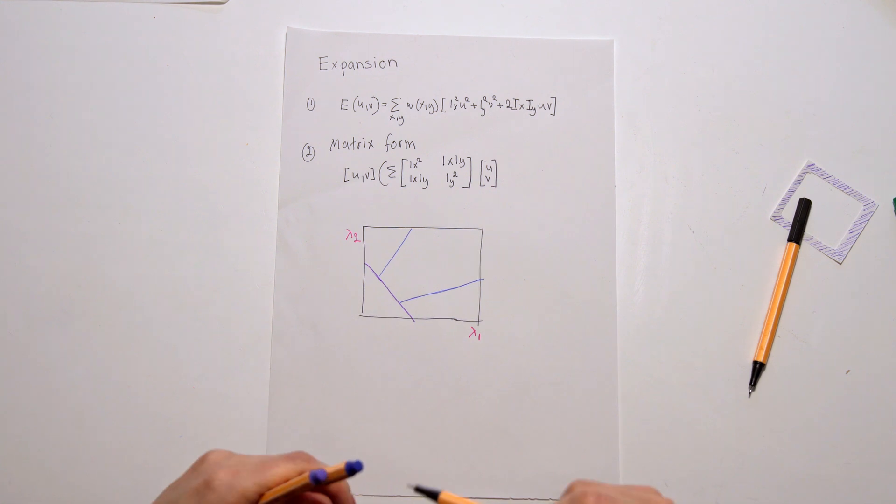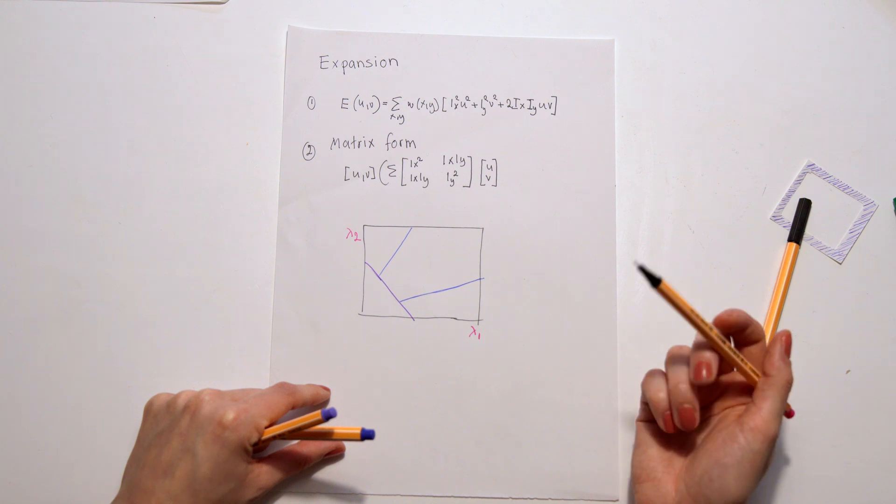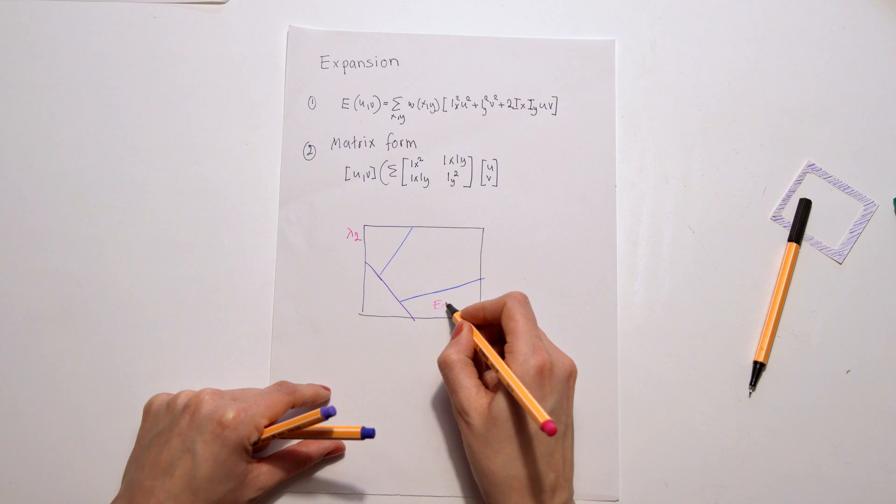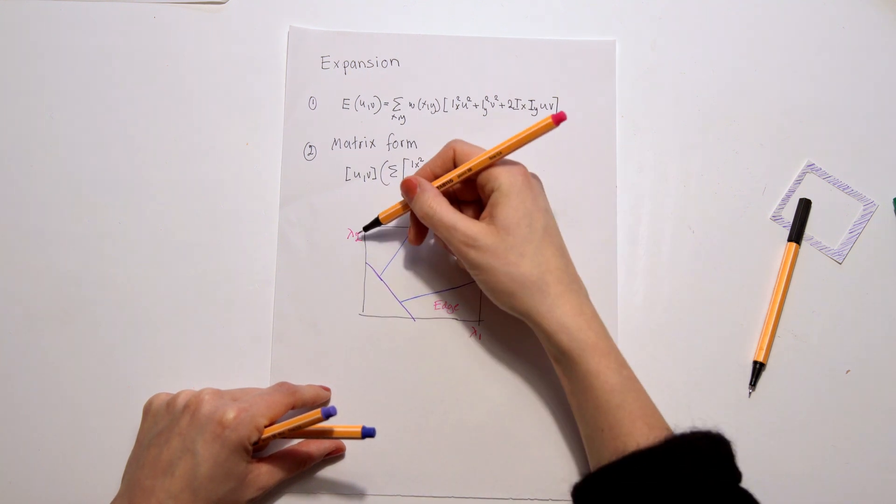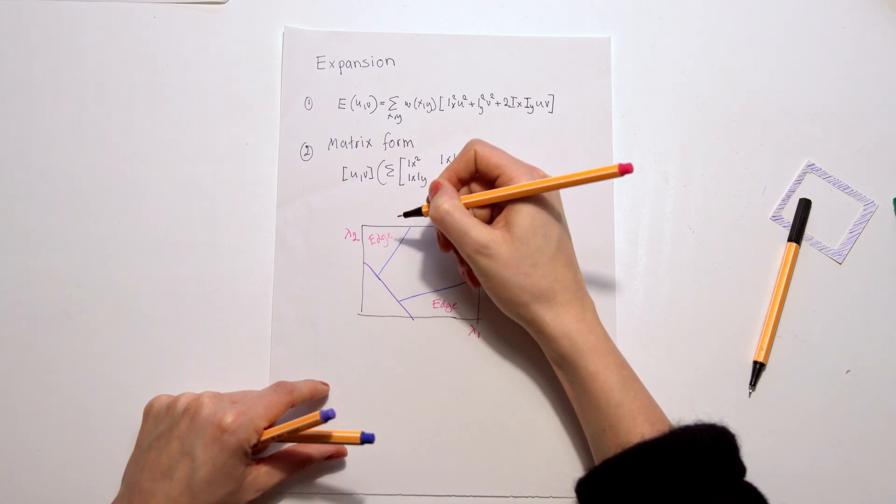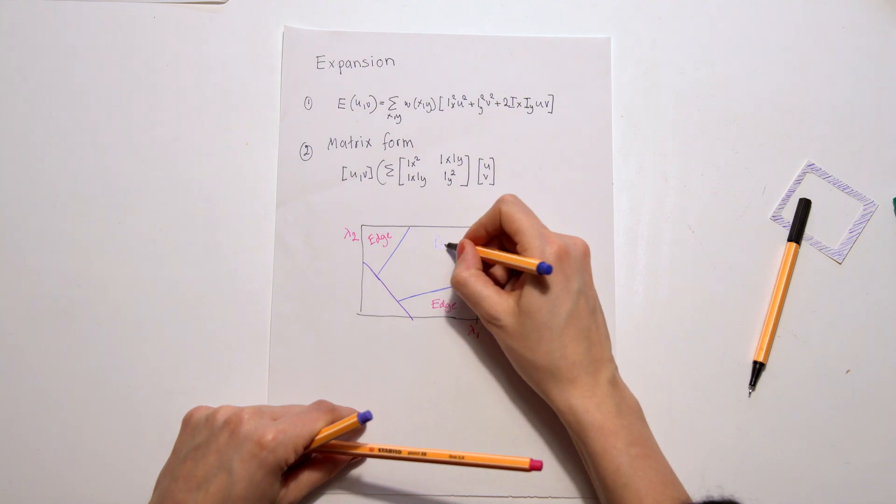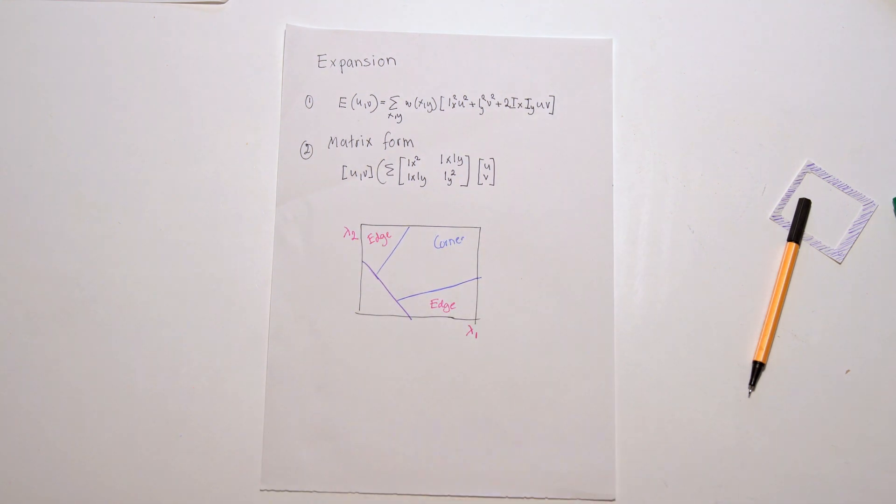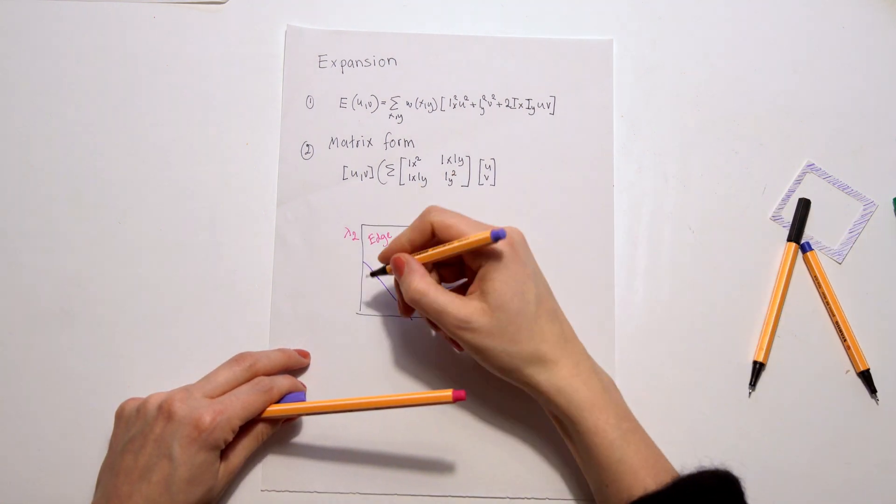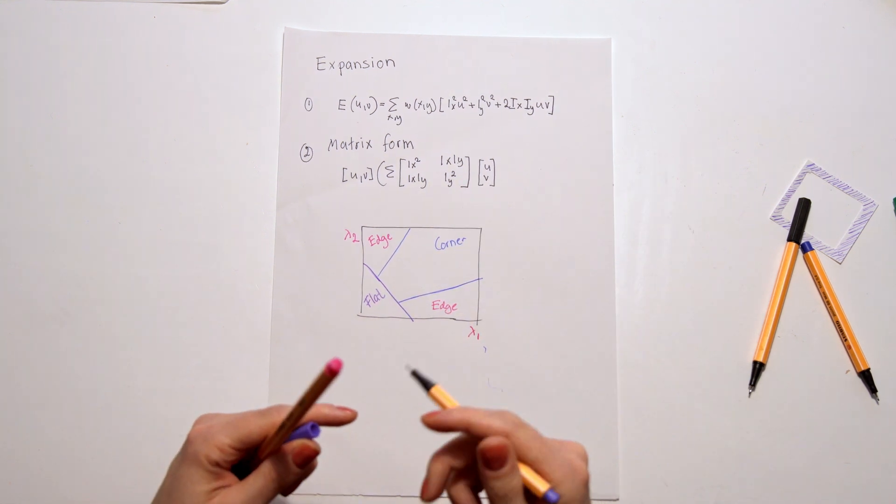And if lambda 1 is very big but lambda 2 will be very small, we know that we will have an edge here. And if lambda 2 is big and lambda 1 is small, we will also have an edge here. However, if both of them are big, there will be a corner. And if both of them are small, it would just be a flat area. So that's why we want to calculate that.